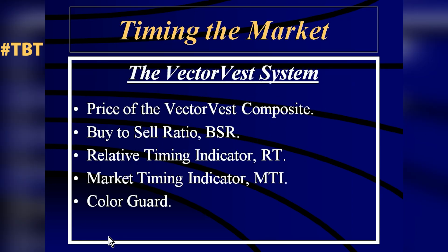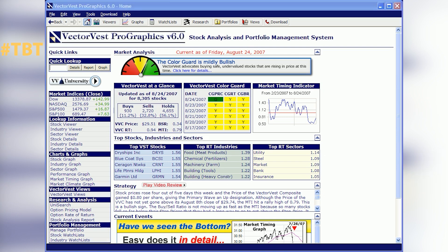We have a system predicated on the use of the VectorVest Composite. The VectorVest Composite is the arithmetic average of all the stocks in the database — the price, the arithmetic average of all the stocks. It's really an index now because we adjust it for splits and new stocks coming in and old stocks taken out, just like the Dow Jones Industrial Average. It reflects what the market is doing. We have a buy/sell ratio, relative timing, a market timing indicator, and a color guard.